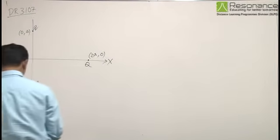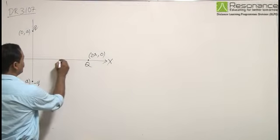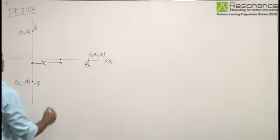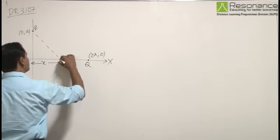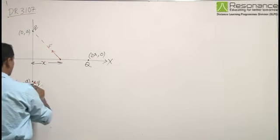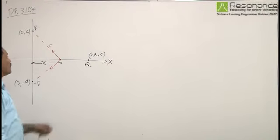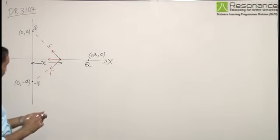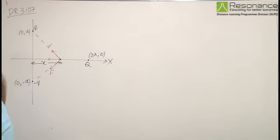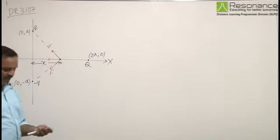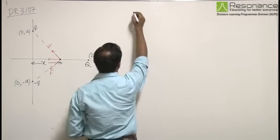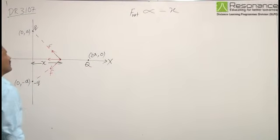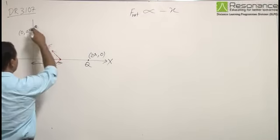Let us assume the charge to be at a distance x from origin at a particular time. In this particular situation, this negative charge will exert force on the positive charge from this direction, and this negative charge will exert force from this direction. So the resultant of these two forces will be towards negative x-axis. Now we have to find out whether it performs SHM or not. The condition for SHM is that net force has to be proportional to minus x. So let's see if this condition is satisfied or not.